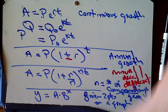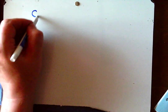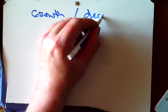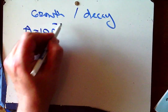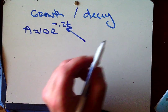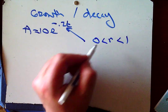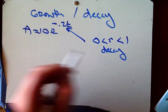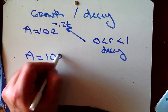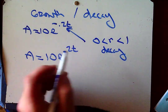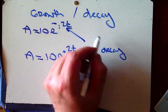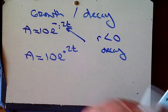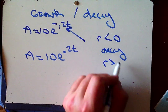Those are our basics. Now, how do I know whether a model represents growth or decay? If I have A equals 10 e to the negative 0.2t, because R is less than zero, I know I'm looking at decay. Likewise, if I have A equals 10 e to the positive 0.2t, because R is greater than zero, we have growth.